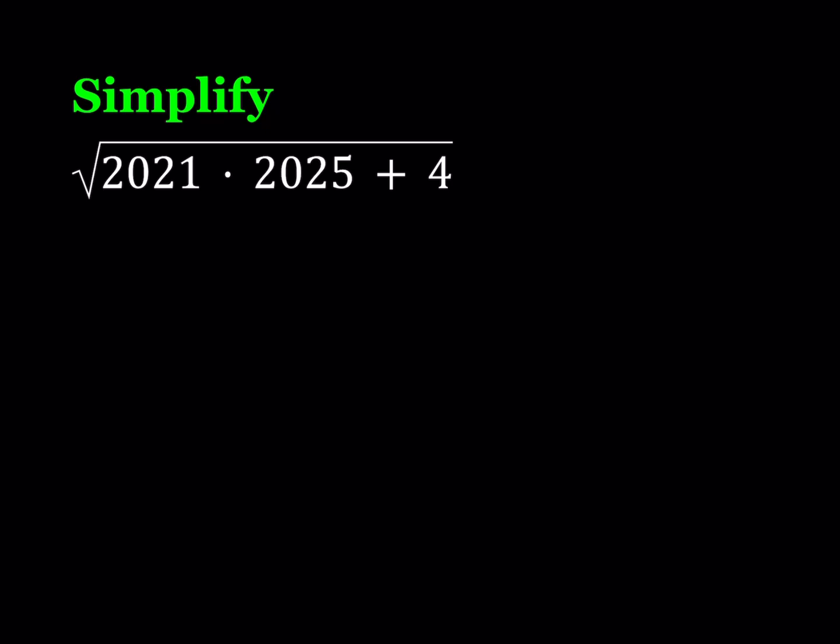I'm going to be presenting two methods and this time I'm going to start with the second method. So second method involves the following. If I average 2021 and 2025 I get 2023. They're basically the same distance apart or same distance away from the same number. So I can write 2021 as 2023 minus 2 and I can write 2025 as 2023 plus 2.